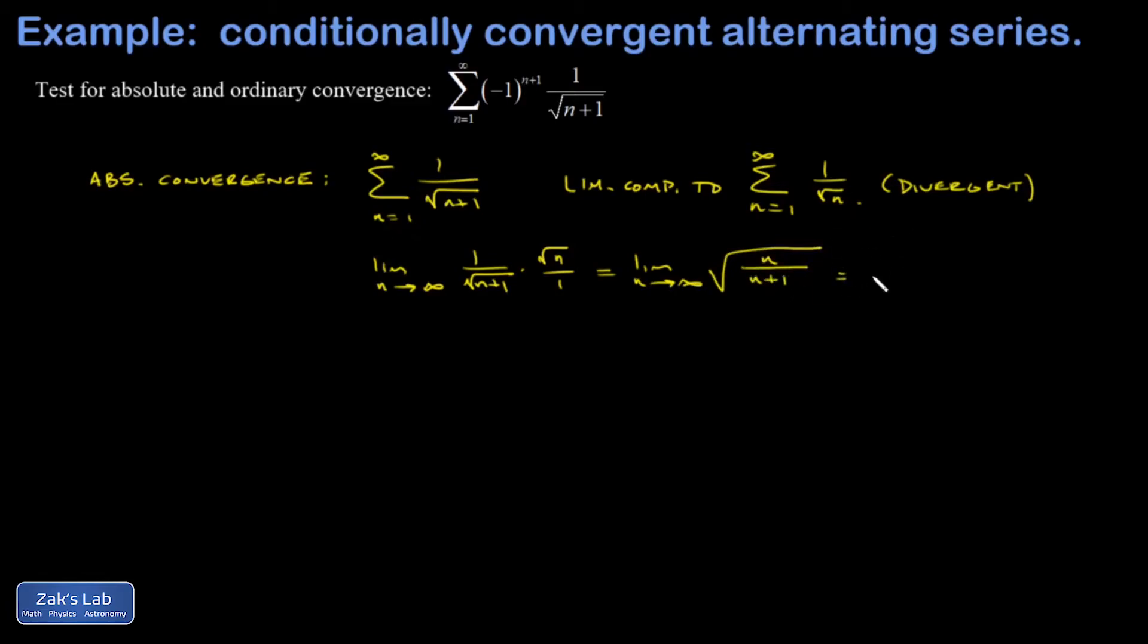I could divide the top and bottom of that fraction by n. And I get the limit as n goes to infinity of 1 over 1 plus 1 over n. And 1 over n unambiguously goes to 0 as n becomes large, and I get a 1 out of this.